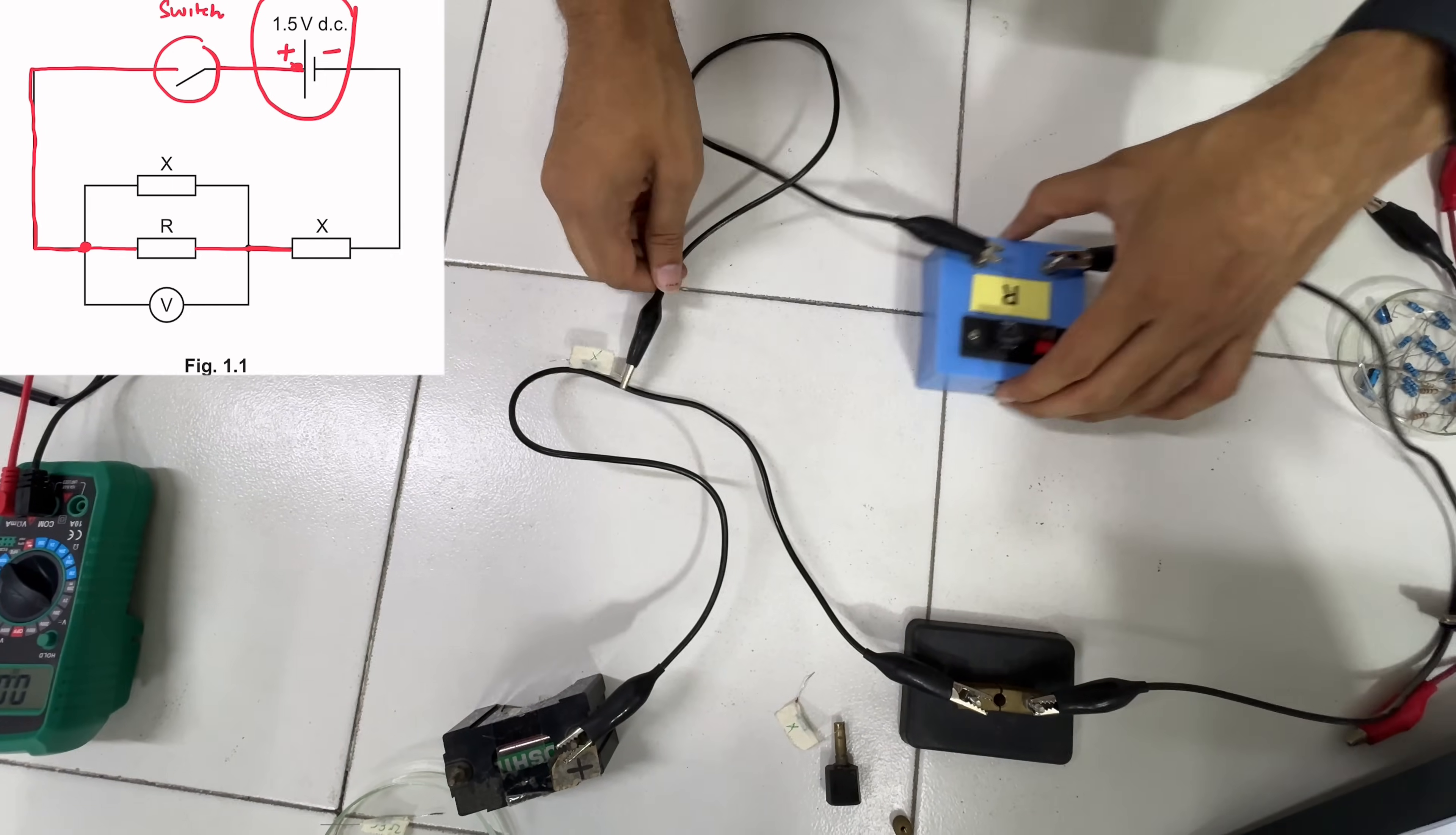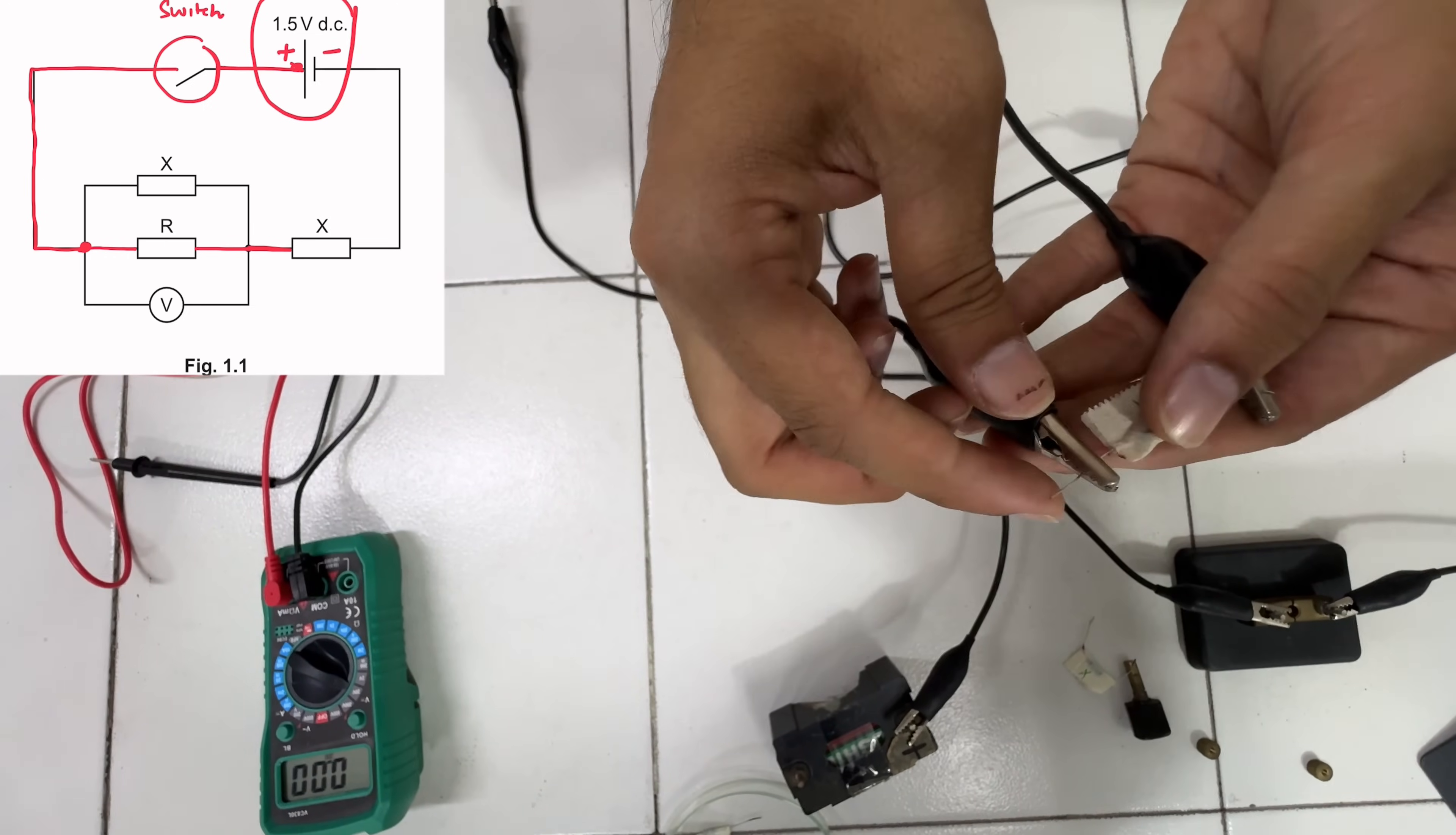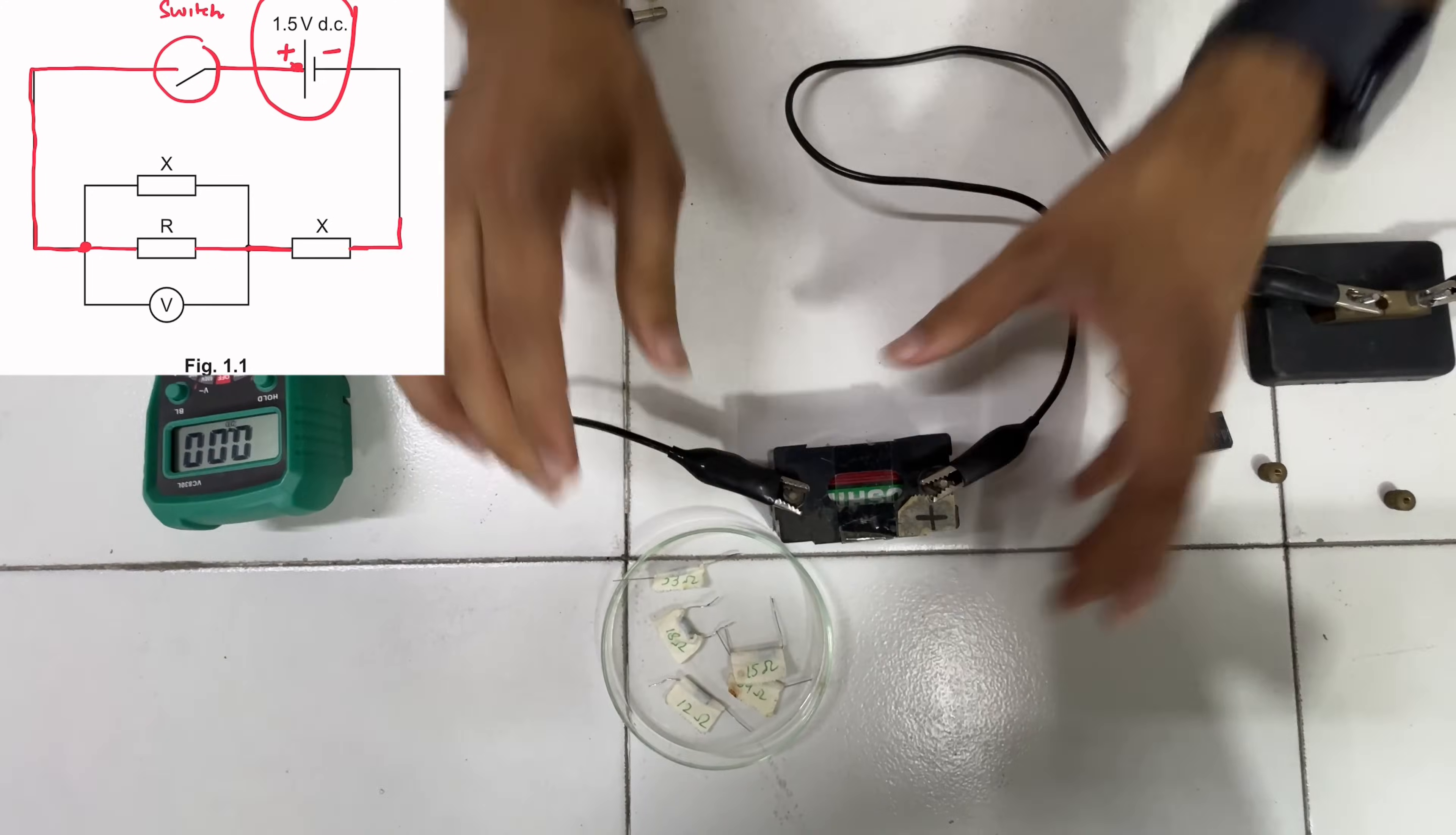Now you have done this, the other end of this gets connected to the battery's other terminal. So again you will connect the crocodile clip, make sure it is the metal part that is touching. A lot of people connect it here which is the paper, so don't do that. That would not give you any reading. Then you connect it to the other terminal of the battery.